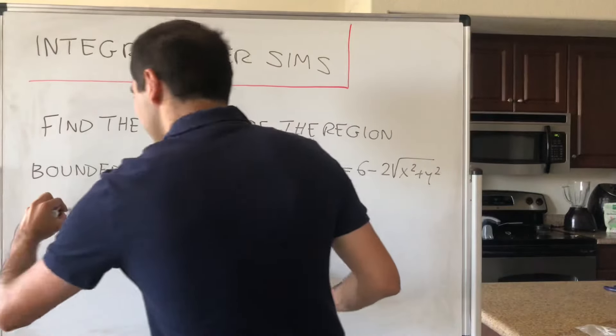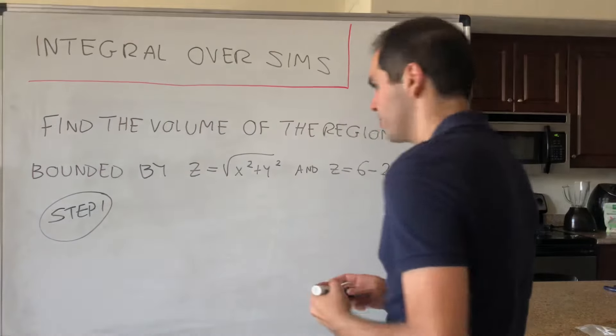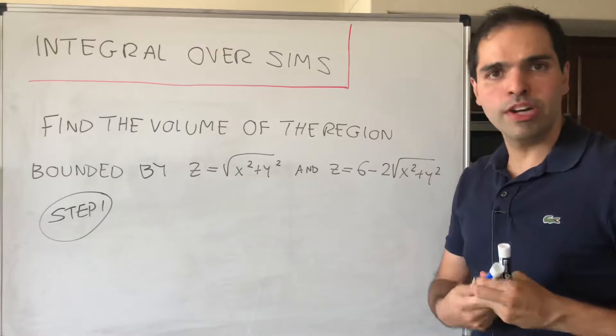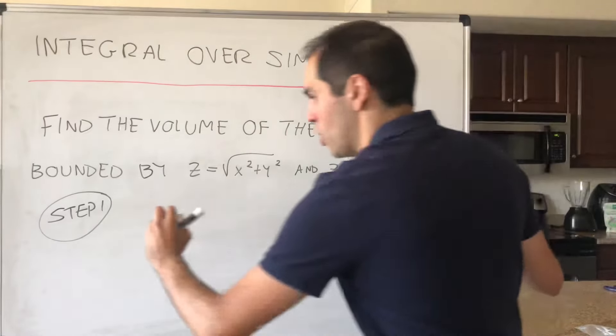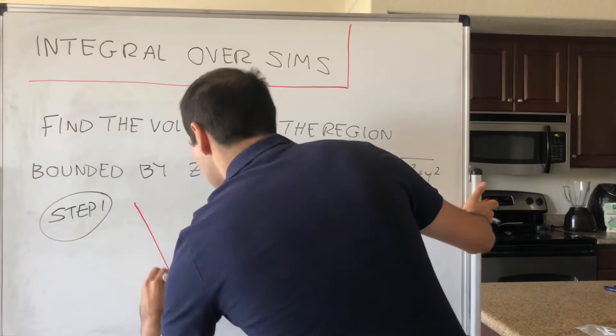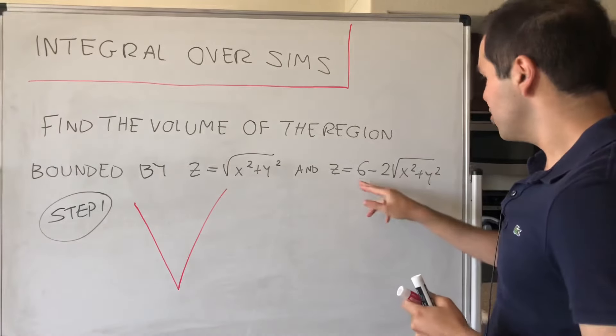So, step one, draw the picture, as usual, for integration problems. Now, what is z equals square root of x squared plus y squared? Well, it's just a standard cone, so it looks like this. So, that is z equals square root of x squared plus y squared.